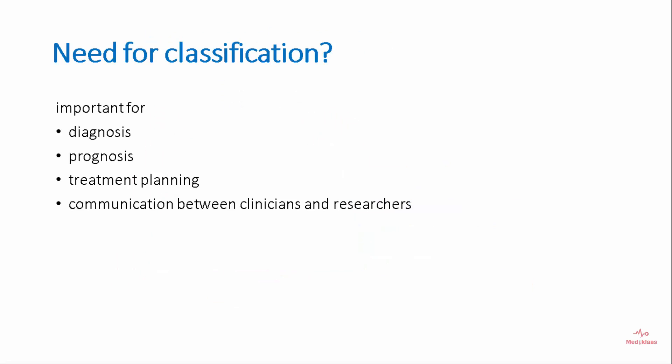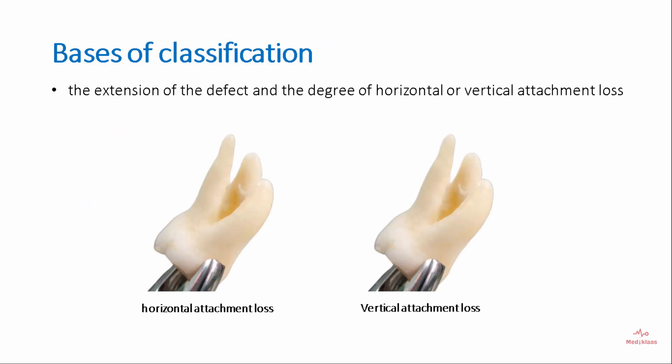The classification of furcation is important for diagnosis, prognosis, treatment planning, and communication between clinicians and researchers. The basis of classification is the extension of the defect and the degree of horizontal or vertical attachment loss. Both horizontal and vertical attachment loss can be considered to form the classification.